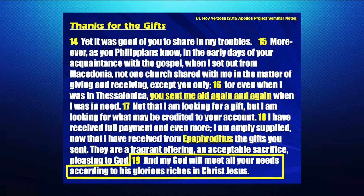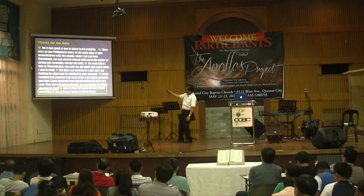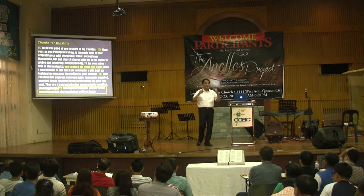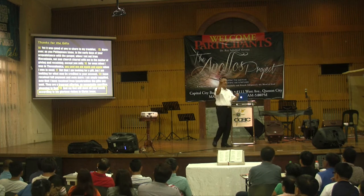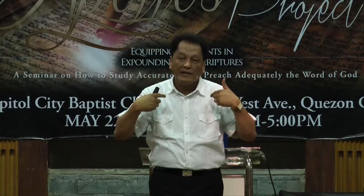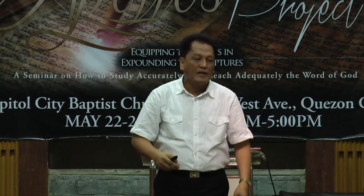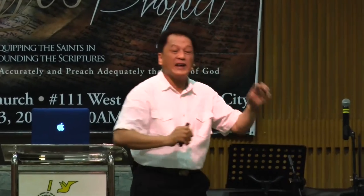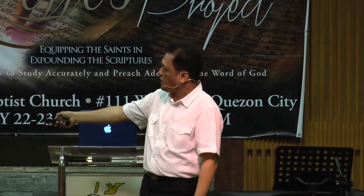Before the Apostle Paul mentioned verse 19 — 'my God will meet all your needs' — he said, 'You sent me aid again and again.' The Philippian church heard that Paul was under house arrest, about to be sent to prison because he elevated his case to Caesar as a Roman citizen. While being processed, he had to wait. If he had money, he could be under house arrest. Because of the Philippian church, they sent him aid again and again, so he was only under house arrest and not in a dungeon.